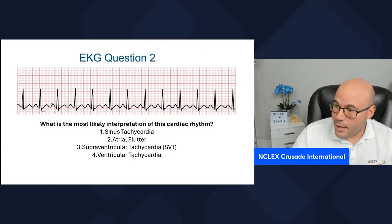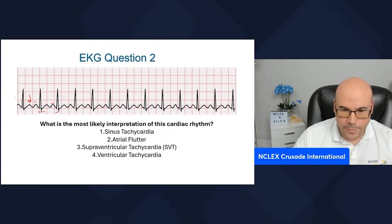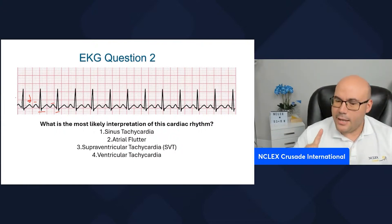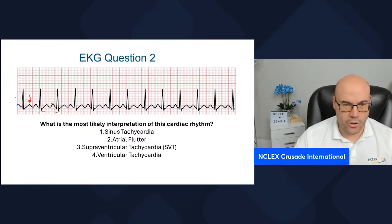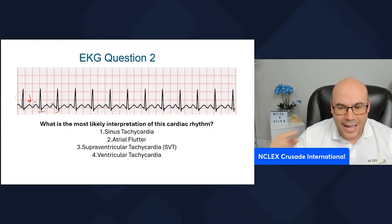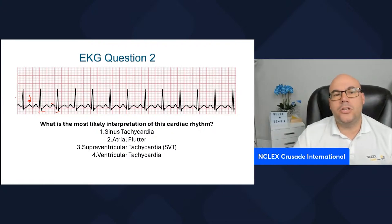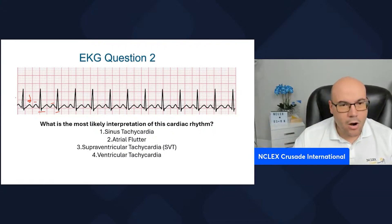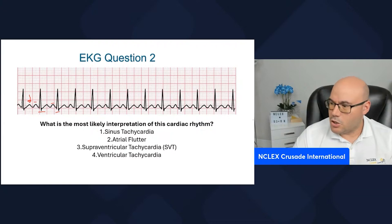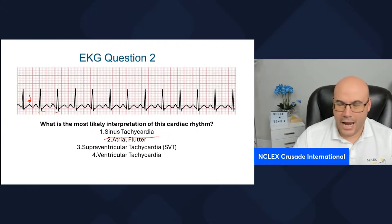We have one P and one QRS. Because this one here that you're looking at — this is the T wave, not another P. The reason I'm saying this is because I noticed some of you analyzed this as atrial flutter. Remember that in both atrial flutter and atrial fibrillation, the confirmation is that you need to see multiple P waves. There are no multiple P waves here — only one P wave and a QRS complex. So this cannot be atrial flutter.